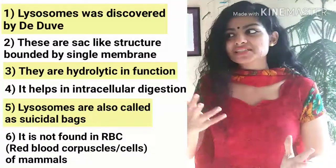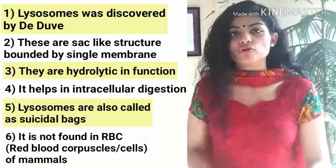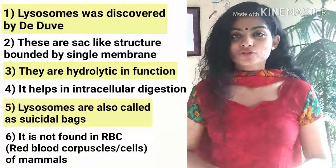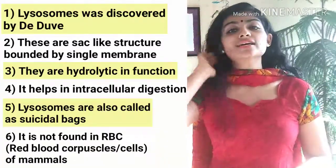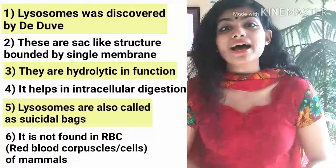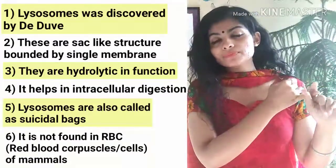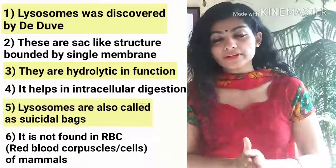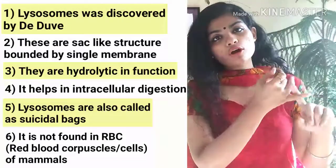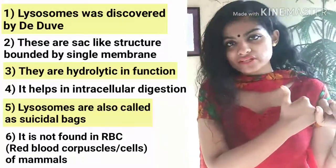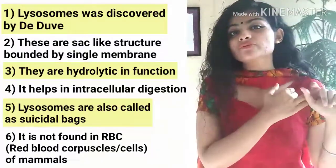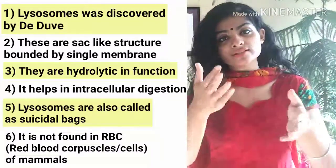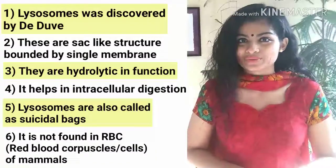That is why lysosomes are also called suicidal bags — they kill and destroy harmful organisms. So remember: lysosome is also known as suicidal bags. A question: which cell organelle is also known as suicidal bags? Answer: lysosomes. Mitochondria is the ATP powerhouse, chloroplast assists in photosynthesis, and ribosomes are called protein factories — but lysosomes are the suicidal bags.